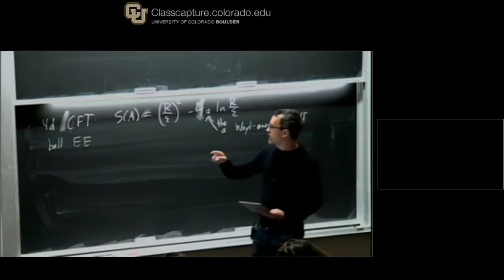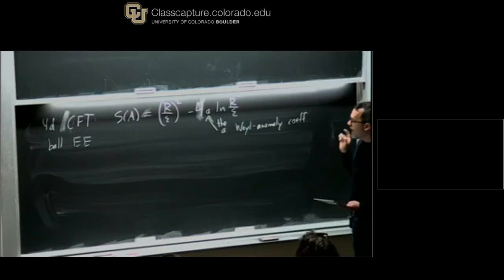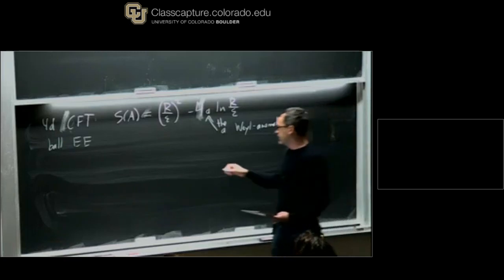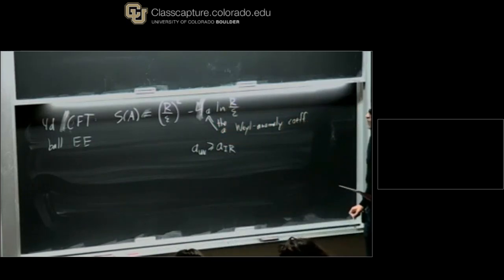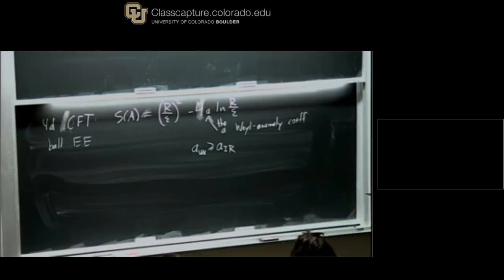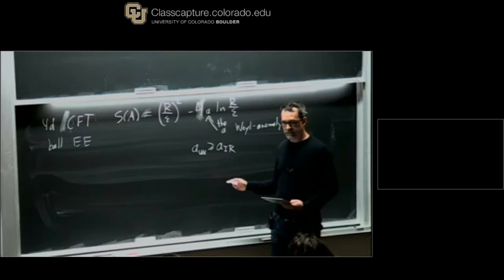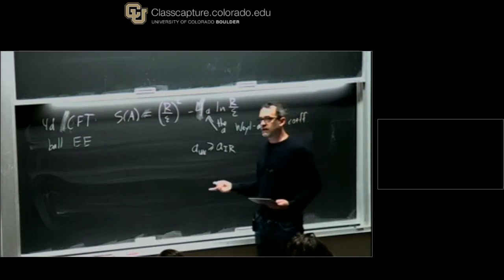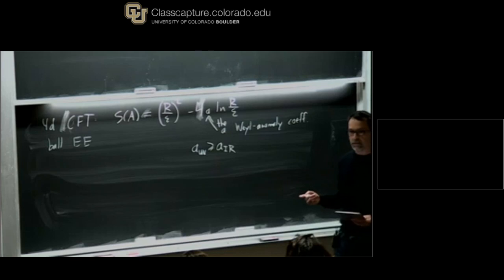After Zamolodchikov proved his theorem in 2D, Cardy conjectured an analogous statement. In 4D, you have two Weyl anomaly coefficients, one is called A and the other is called C — they multiply different curvature invariants. Cardy conjectured that A is the one that decreases along RG flows. This was proven by Komargodski and Schwimmer using correlation functions of the stress tensor and unitarity, but they had to use four-point functions rather than two-point functions — a much more complicated proof.